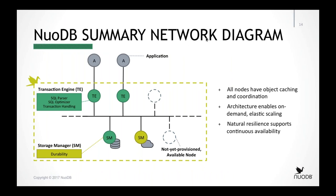Applications at the top can connect to any transaction engine — there is no head node or master node. Because the transactions are fully in-memory, they build up their caches based on application workload. You could have different application workloads going to different transaction engines managing totally different data sets. For example, if you wanted to do some analytics against this data, you could run a transaction engine on a larger-memory system and have a BI tool work against it, accessing real-time data. NuoDB supports what Gartner calls HTAP — Hybrid Transactional Analytical Processing — the ability to do both operational workloads and operational analytics, which are quick analytics or dashboard-style views of the data.